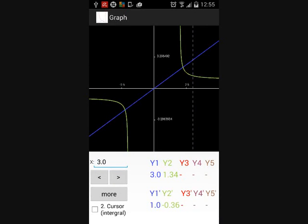You see two tables: the upper one for the Y values, the lower one for the first derivative, which you gain automatically in GraphIT.